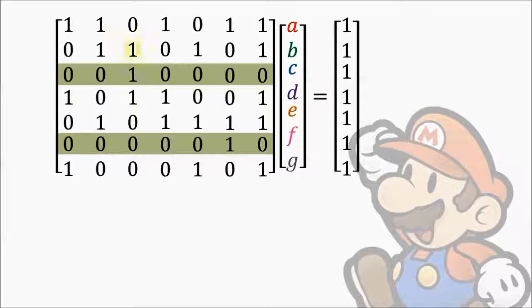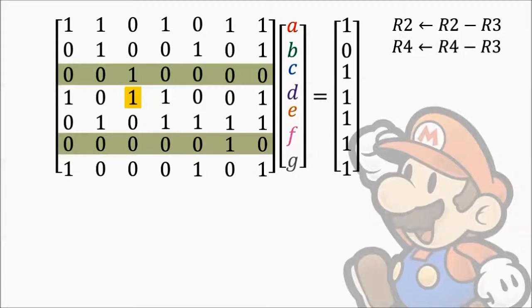For example, using the third row, we can change the two ones I've highlighted here to zeros. First, we'll take the second row and subtract the third row. Next, we'll take the fourth row and subtract the third row. We can also use the sixth row to remove some of the ones. We can subtract row 6 from row 1, and we can subtract row 6 from row 5.